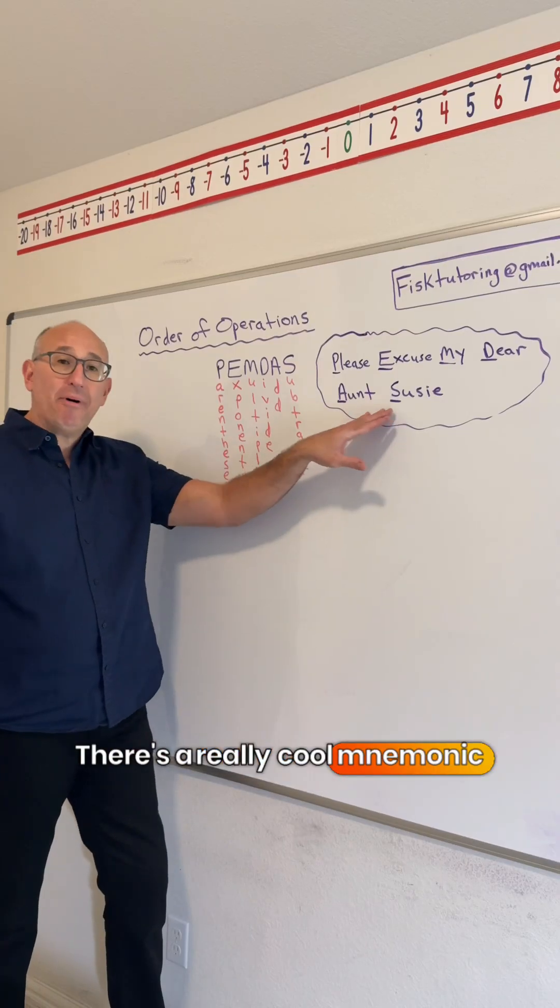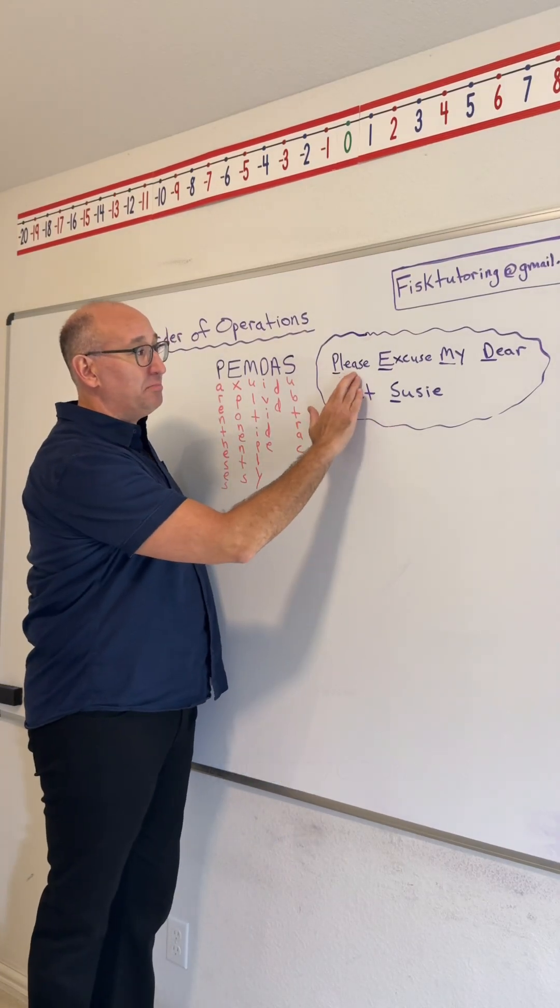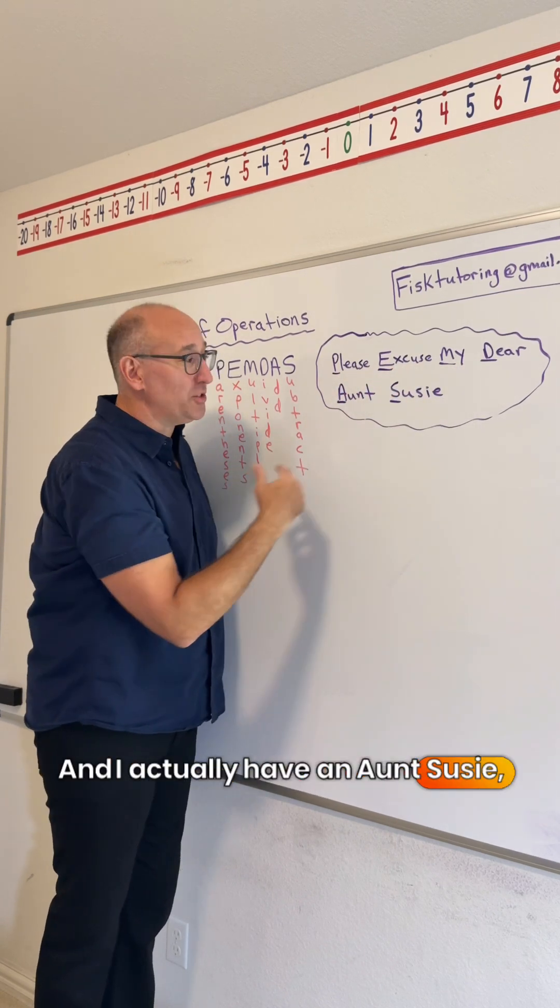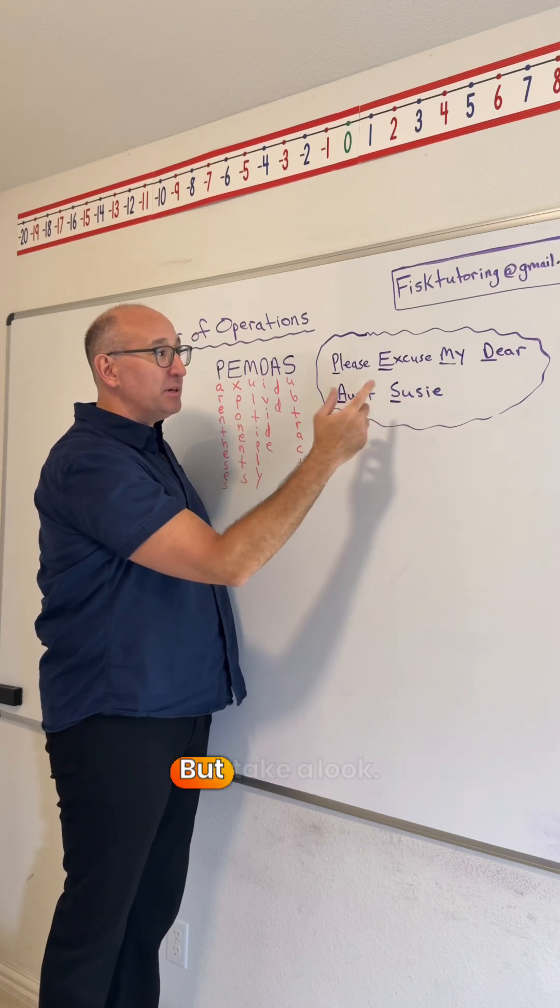There's a really cool mnemonic device that comes along with this and it says, please excuse my dear aunt Susie. And I actually have an aunt Susie, so this is really helpful for me. But take a look.